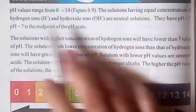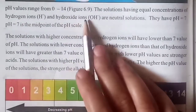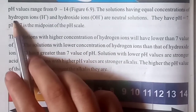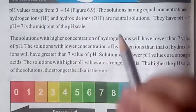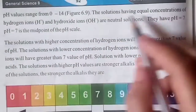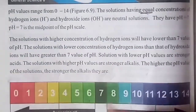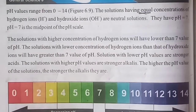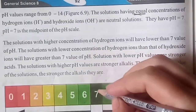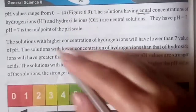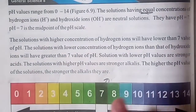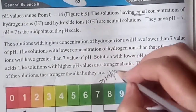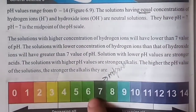The solution having equal concentration of hydrogen ion and hydroxide ion are neutral solutions. Pure water is an example — equal amounts of hydrogen ion and hydroxide ion. These are neutral solutions and they have a pH value of 7. The power of hydrogen is 7 for neutral solutions. pH 7 is the midpoint of the pH scale.